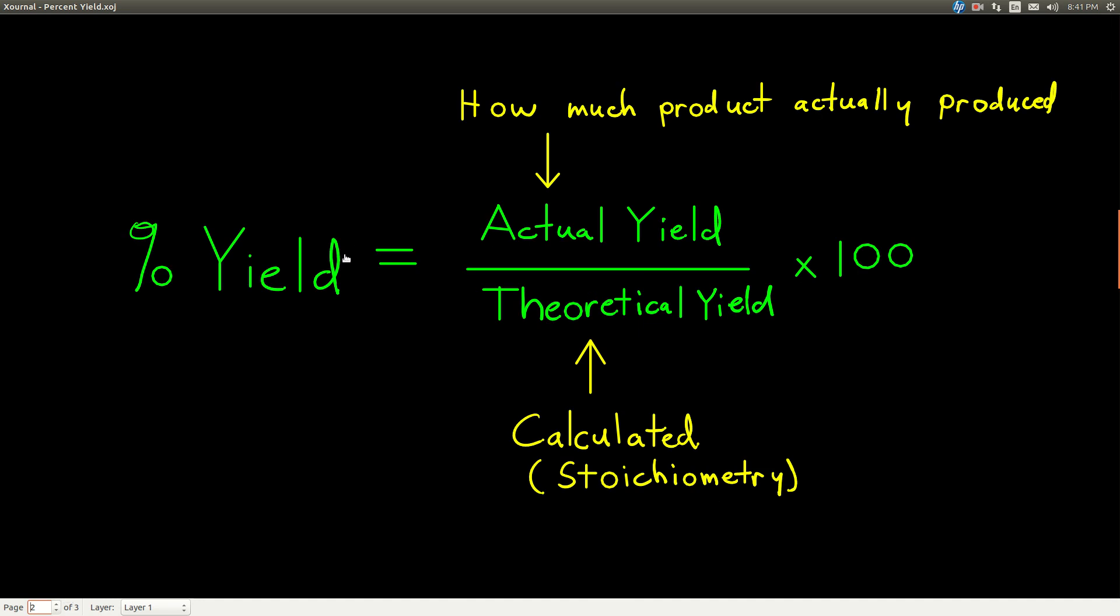So, here's what it is. The definition of percent yield for a chemical reaction is your actual yield divided by your theoretical yield times 100. What do those mean?